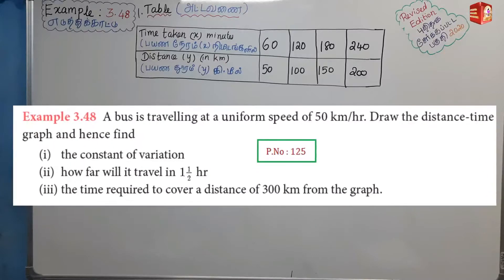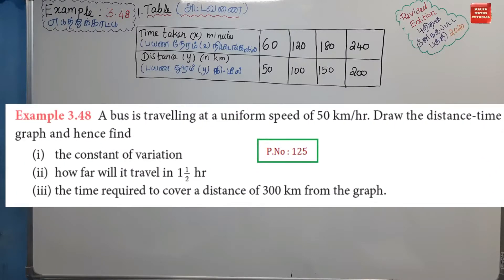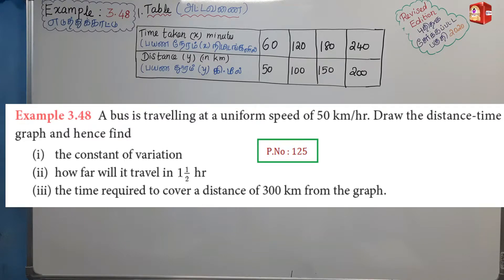Example 3.48. A bus is travelling at a uniform speed of 50 km per hour. Draw the distance-time graph and hence find: 1. The constant of variation. 2. How far will it travel in 1.5 hours. 3. The time required to cover a distance of 300 km from the graph.